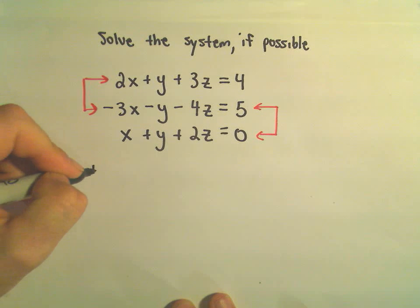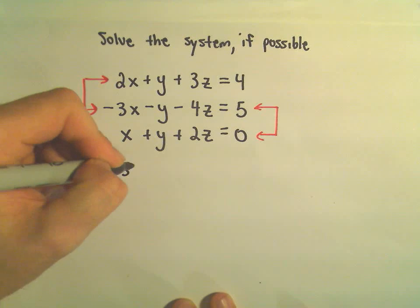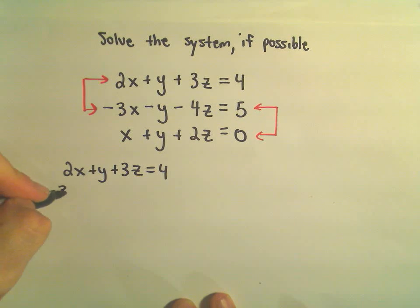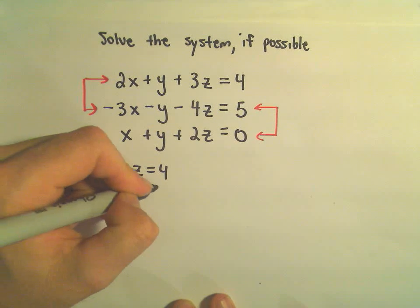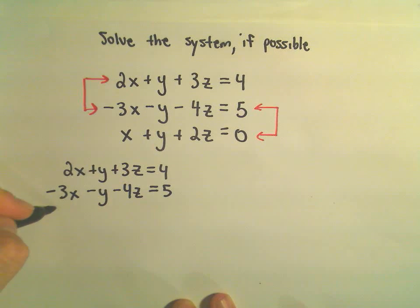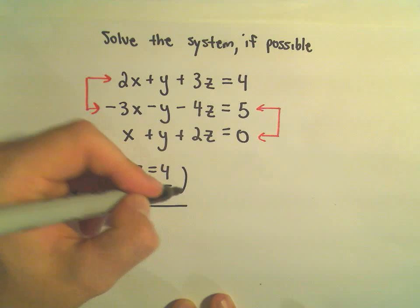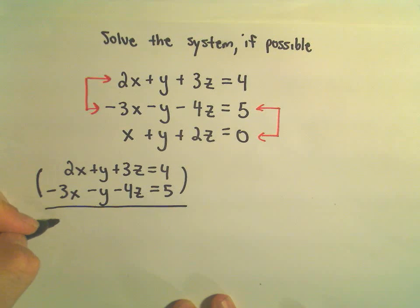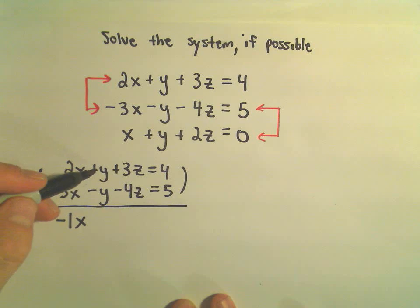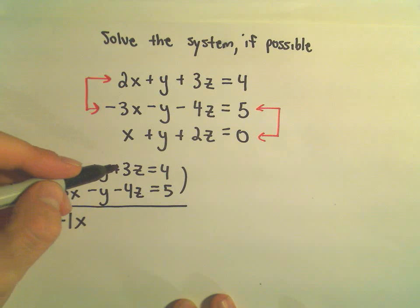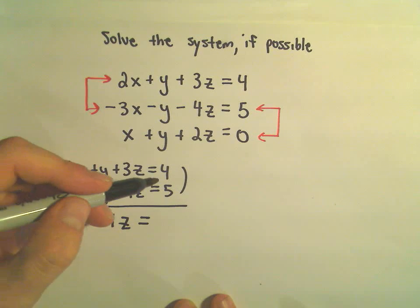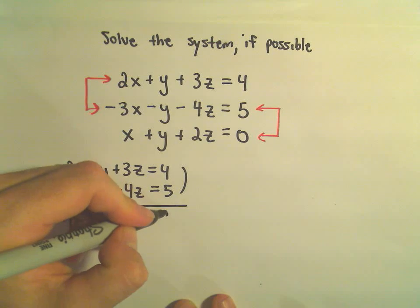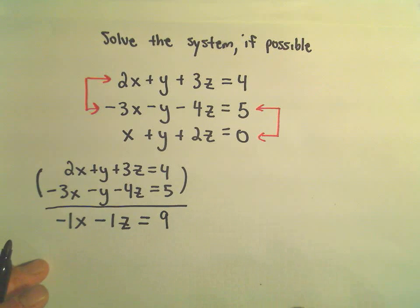So, alright, so 2x plus y plus 3z equals 4. We've got negative 3x minus y minus 4z equals 5. Let's see if we add those together. 2x plus negative 3x would be negative 1x. Positive y minus y is 0y. 3z plus negative 4z would be negative 1z. And then we've got 4 plus 5, which would give us 9.